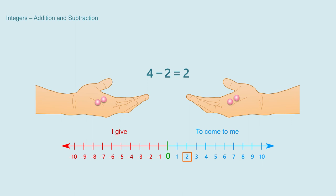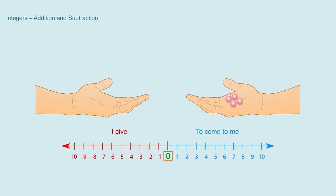Will this always happen? If I give less beads than the beads I have then the answer will always be a natural number. But if I give all the 4 beads that I have to my friend then there will be no bead left with me. So we say that I have 0 beads left with me and show this as 4 minus 4 equal to 0.